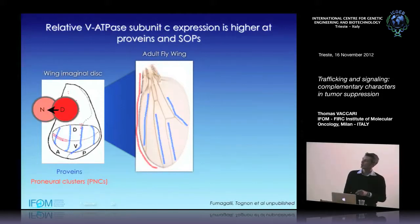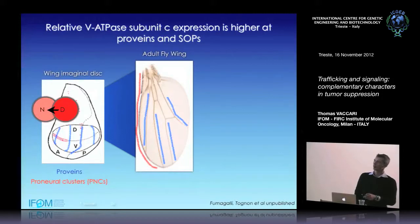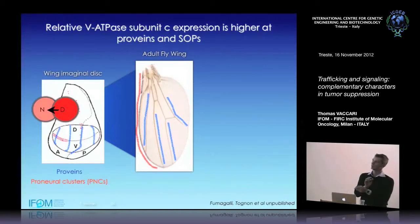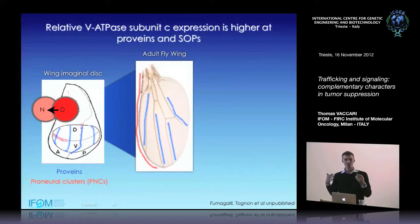In the pro-vein region, the pro-vein that gives rise to the vein is the Delta-expressing cell, and the intervein tissue is where Notch is activated. A sharp boundary from sending to receiving cells is needed to make a vein. Similarly in the proneural cluster, a single cell inside becomes the sending cell and surrounding cells are receiving cells. This has been very well characterized, and the question is whether we would see differences in expression of V-ATPase components in these areas.